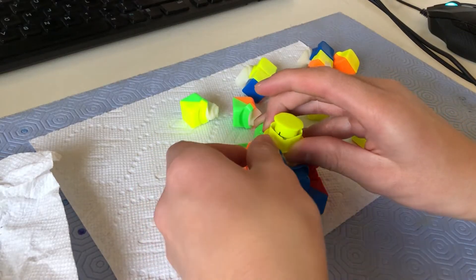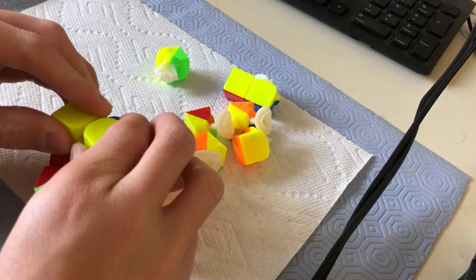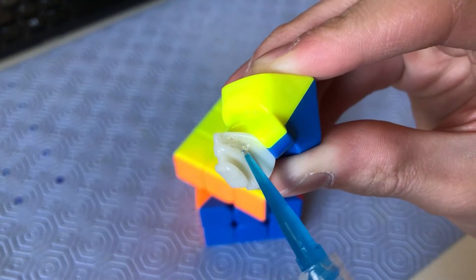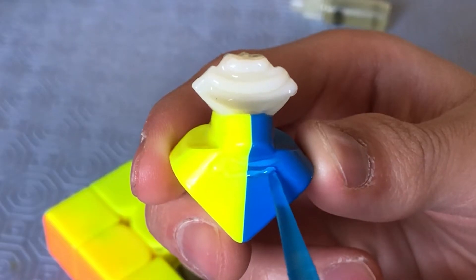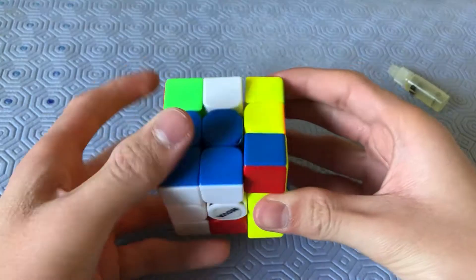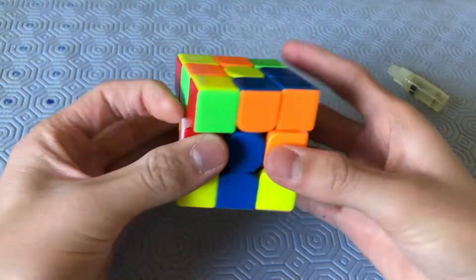After I almost have the full cube reassembled, I take out one edge piece and on that edge piece, I apply some weight five onto the tracks and onto the piece. I put the piece into the cube and oh my god, it's so slow. It's absolutely awful.